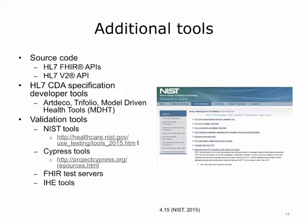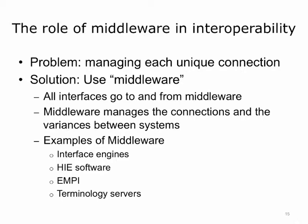There are other tools in vendor products that could also be used and new tools are always being developed. Interoperability tools are also called middleware since they are in the middle between communicating systems. They provide a very important role. They help to solve the problem of managing the complexities of healthcare interoperability. They help with the management of each unique connection. All interfaces go to and from the middleware. Middleware helps manage the connections and the variants between the systems. Middleware helps manage the differences in data terminology and the differences in patient identification, and provide mappings and linkages so that records can be found across organizations and data can be linked and compared.